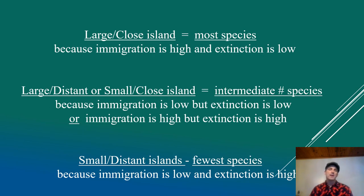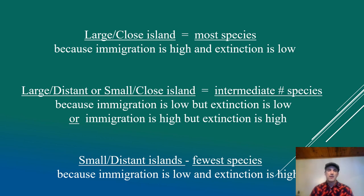To break it down simply: large, close islands have the most species, because immigration is high, there's more habitat, and the risk of extinction is low. Large distant islands or small close islands would be somewhere in the middle. Small islands that are distant and very isolated are going to have the fewest species. Take a moment to think about this, because when you give it a little thought, it becomes very intuitive that this makes a lot of sense.